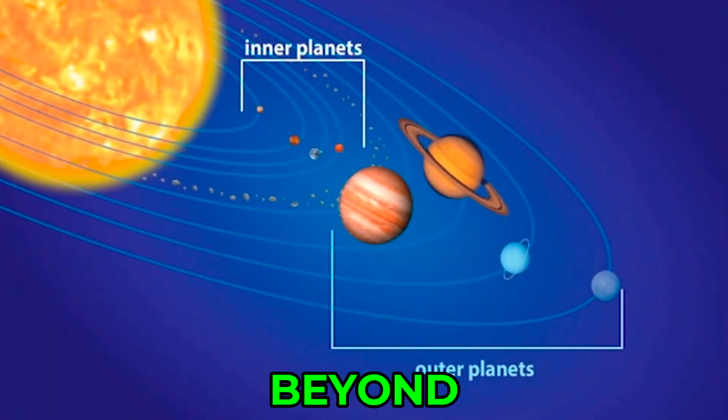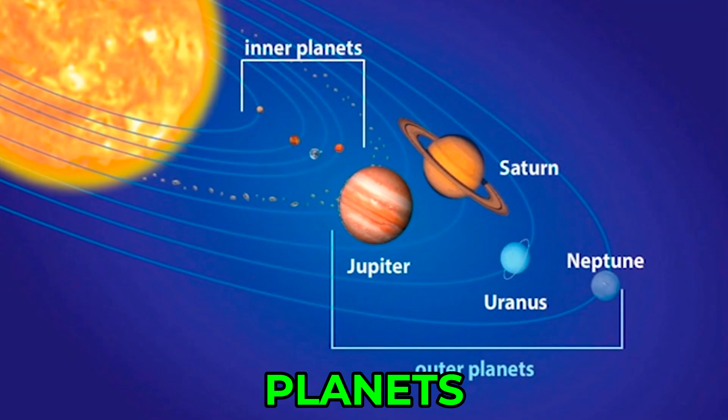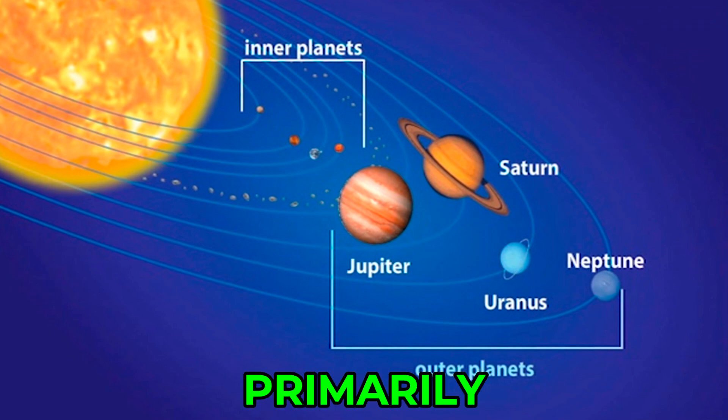The outer planets beyond Mars are the gas giant planets: Jupiter, Saturn, Uranus, and Neptune. They are also known as the Jovian planets. These planets are much larger and spaced further apart than the inner planets. They are primarily composed of hydrogen and helium.